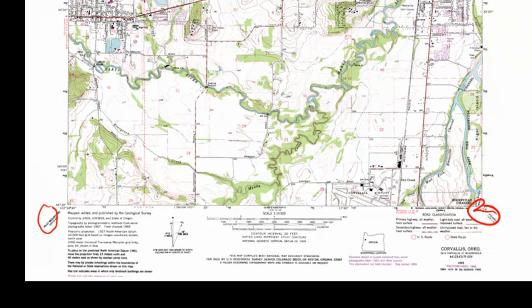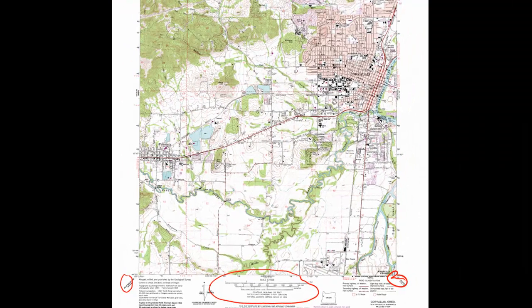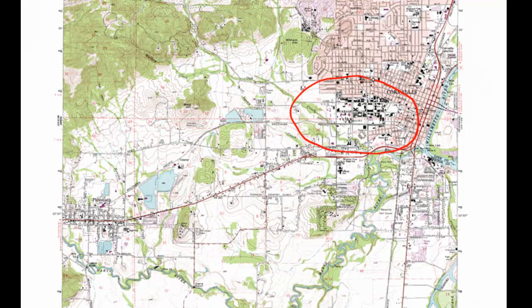We can also measure distances on a map using the ruler and the bar scale, which is down here at the bottom of the map area. For example, if we want to measure how wide the OSU campus is in an east-west direction, we would take our ruler, measure a distance in inches on the map area, and then use the bar scale to convert inches on the map to miles in the real world.